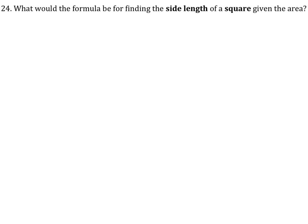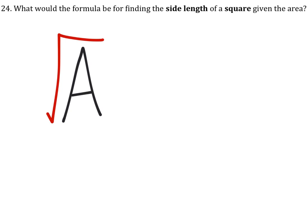What would the formula be for finding the side length of a square given the area? If we have the area and we want the side length, then we would square root the area. And that is a side.